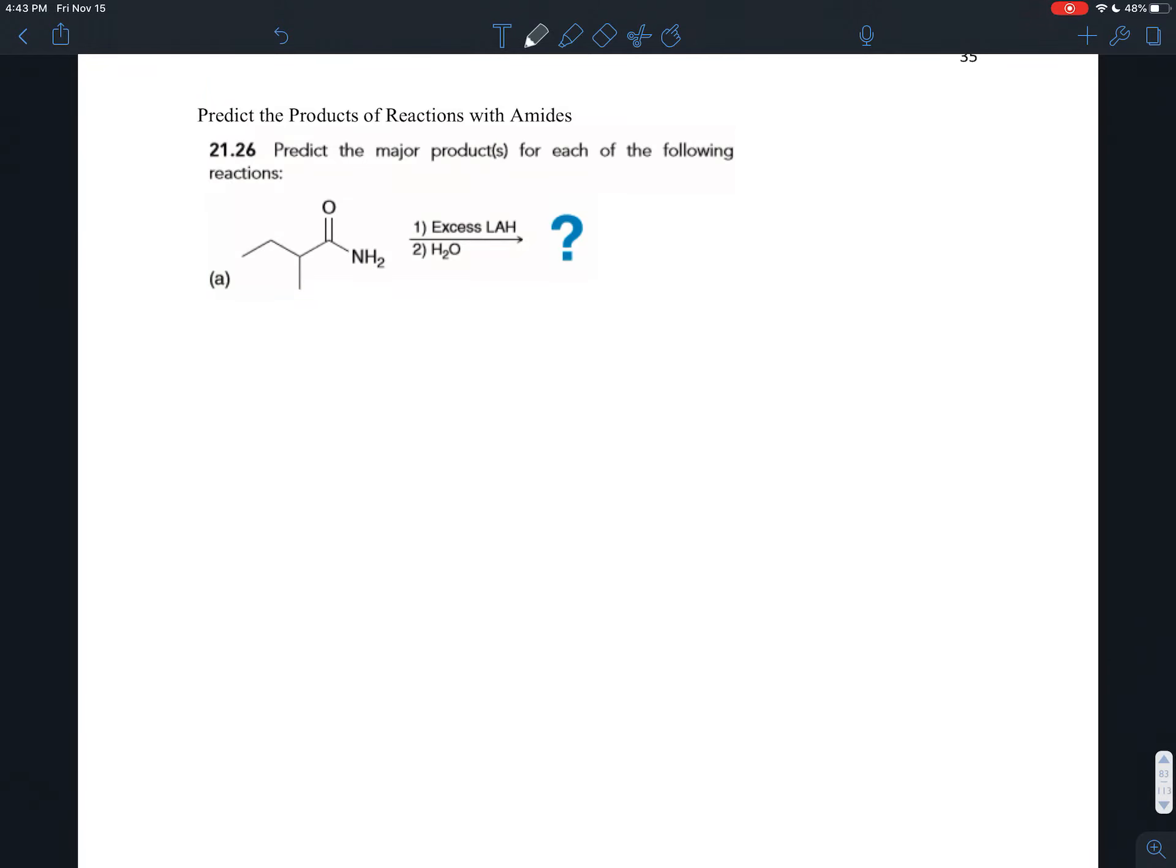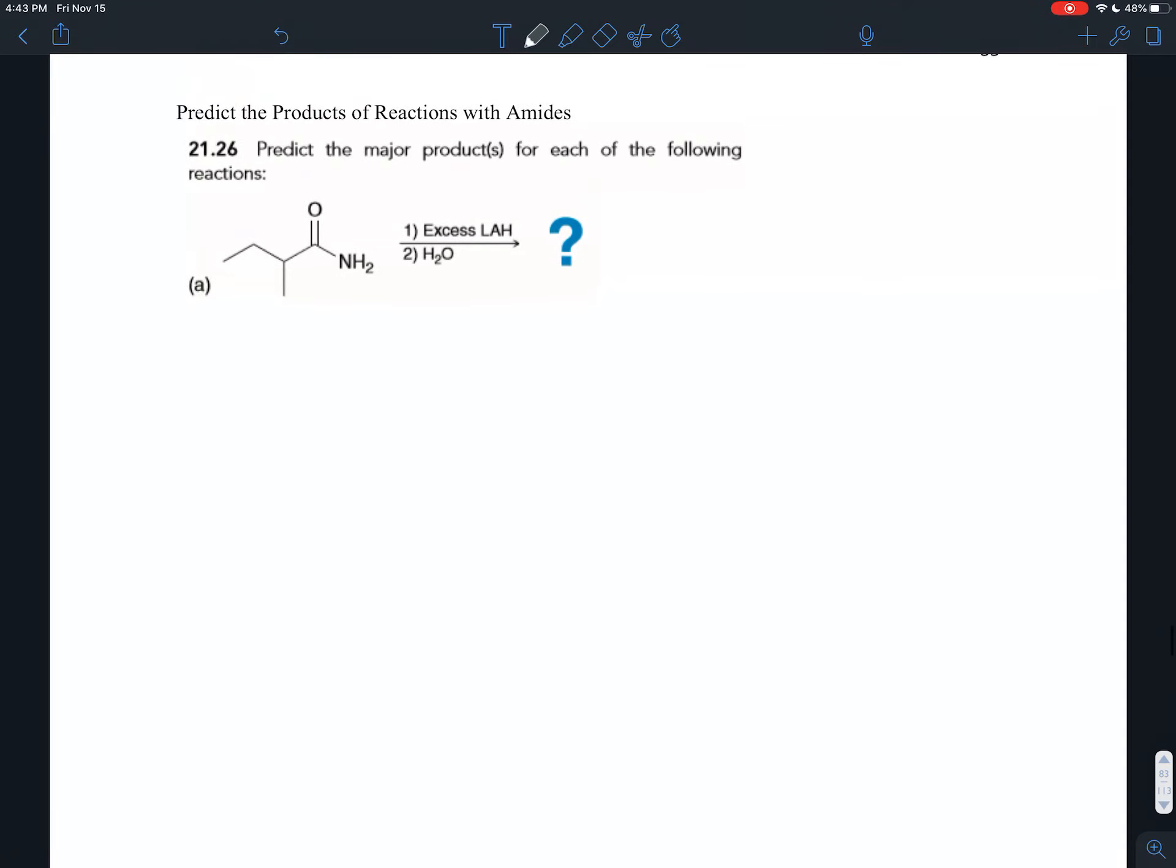Exercise 21.26 wants you to predict some major products for reactions with amides. You'll notice there aren't quite as many of these as there are for reactions with, for example, acid chlorides.